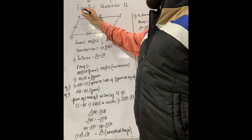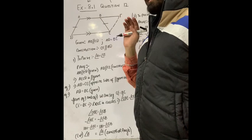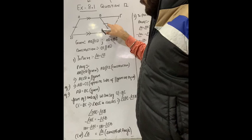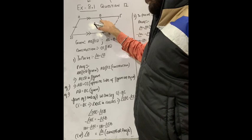Students, we are going to do question number 12 of exercise 8.1, chapter quantum reference. In this question, ABCD is a trapezium. AB is parallel to DC, and AD is equal to BC. You have to prove that angle A is equal to angle B.